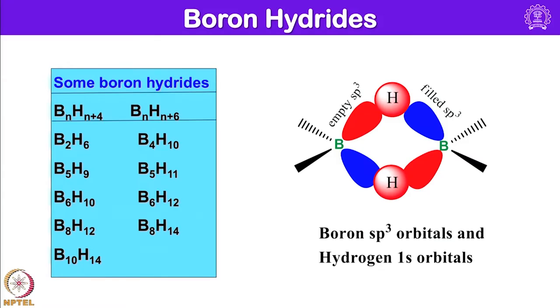Prior to the formation of BH3, boron promotes one electron to the p orbital and undergoes sp3 hybridization to have three sp3 orbitals each with one electron and one sp3 orbital with no electron. They arrange and interact with the 1s electron of hydrogen to form the bonding. Two are terminal bonds with two electrons each, and the bridging arrangement gives a 3-center BHB two-electron bond. Similar type of bonds can be anticipated wherever a hydrogen bridges two electron-deficient boron atoms in boron hydrides.